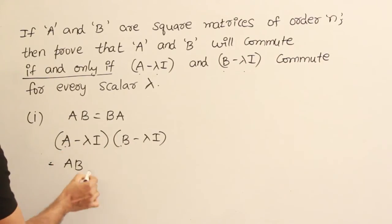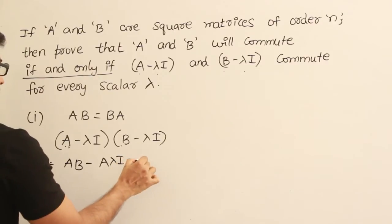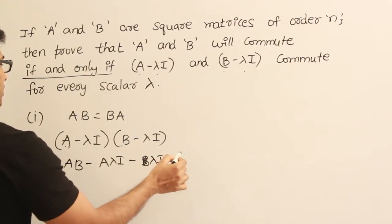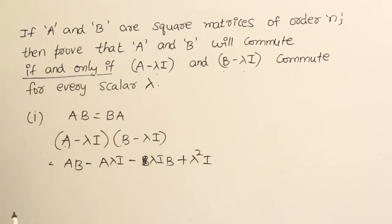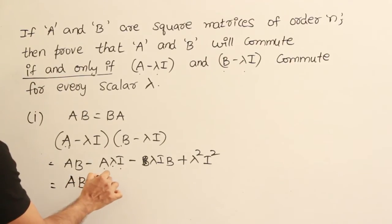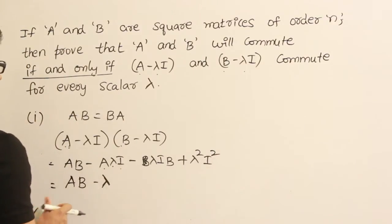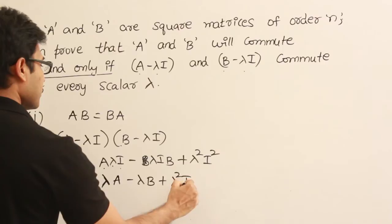Expanding A minus lambda I into B minus lambda I: we get A into B, minus A into lambda I, minus lambda I into B, plus lambda squared into I. Since I squared is I, and A into I is A, we simplify to get AB minus lambda A minus lambda B plus lambda squared I. That is the result of this multiplication.